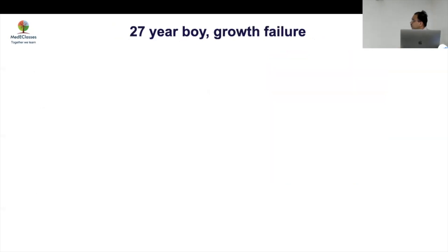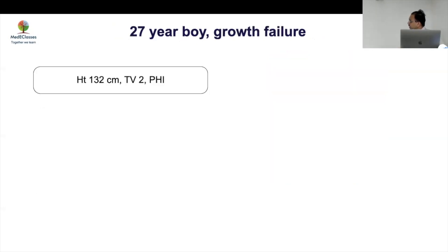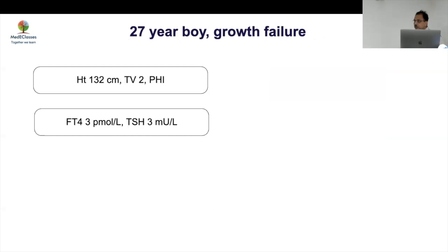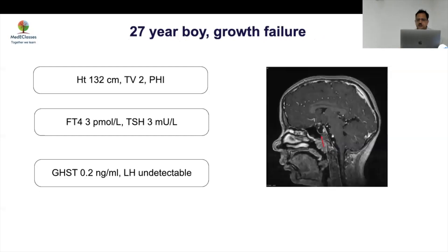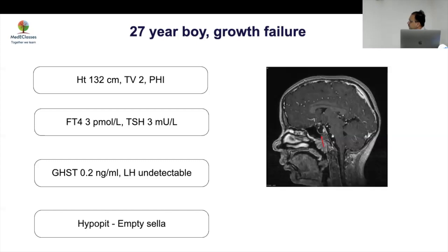Case 3: A 7-year-old boy with growth failure, height 132 cm, low FT4 with normal TSH — multiple pituitary hormone deficiency. MRI shows an empty sella — nothing is seen in the sella in that regard.